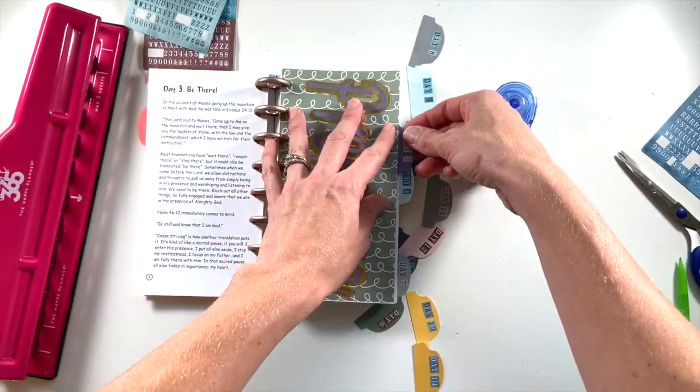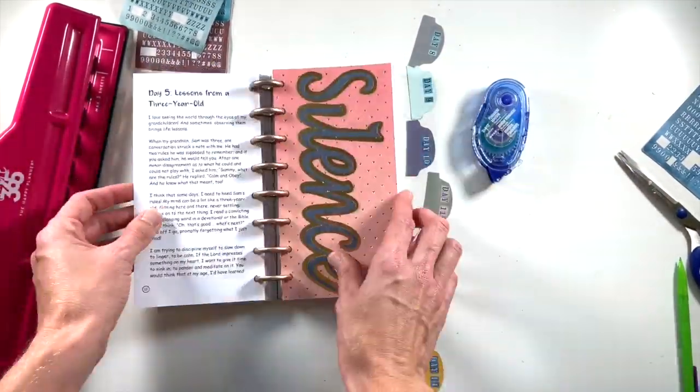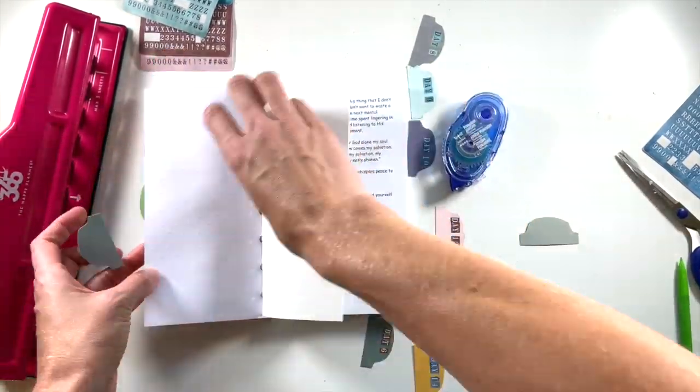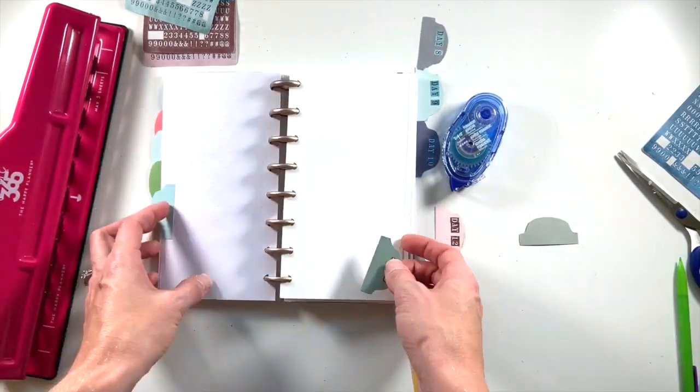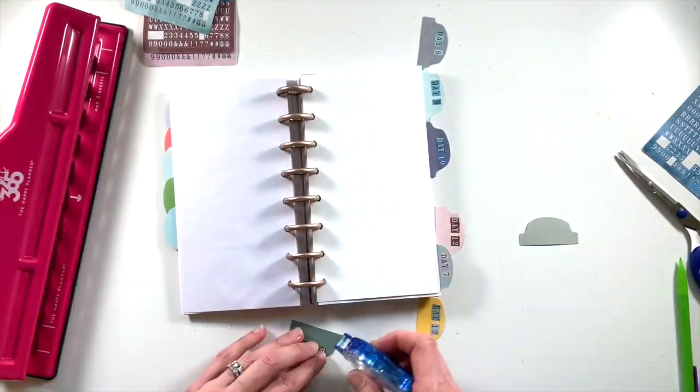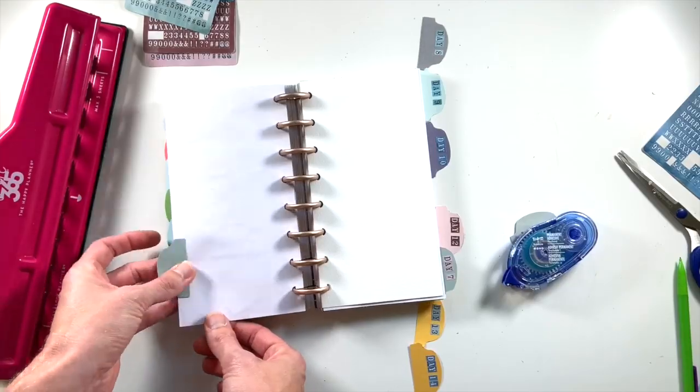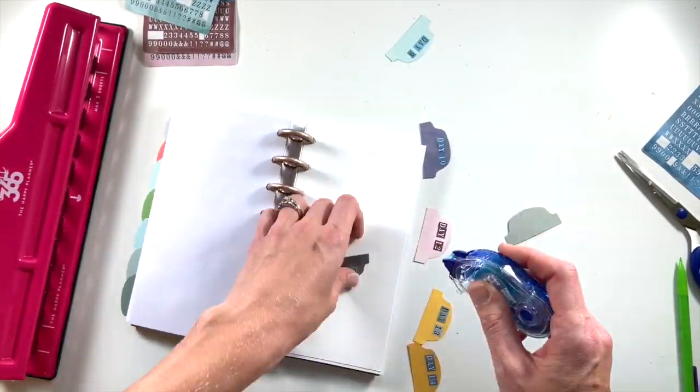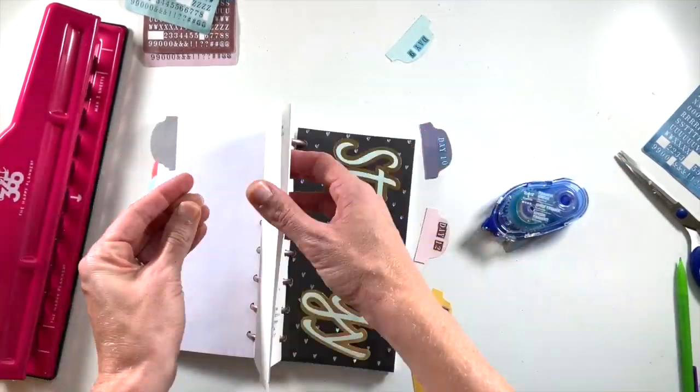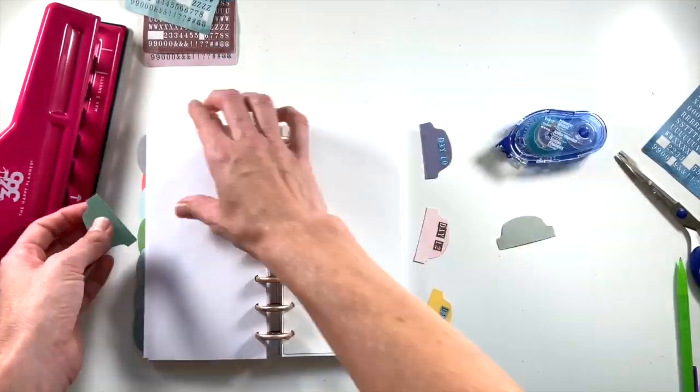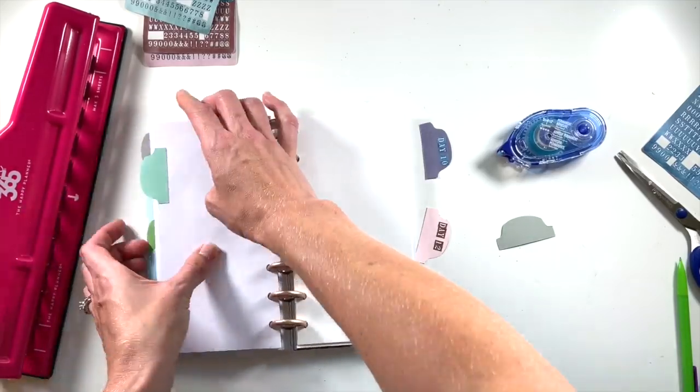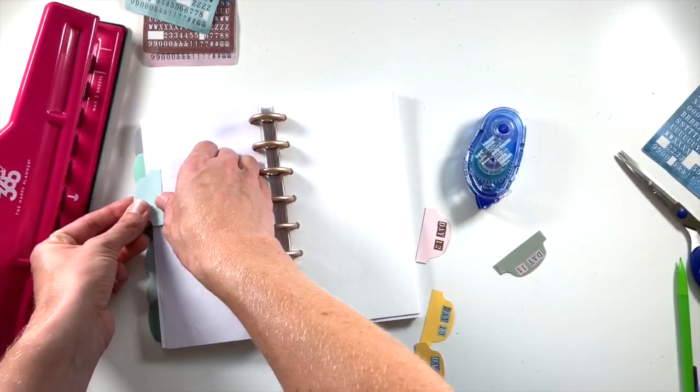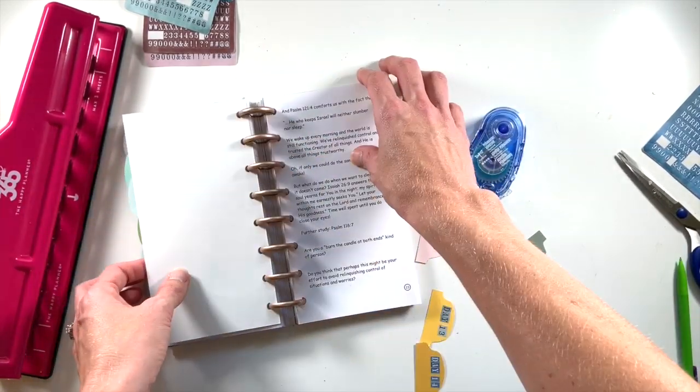You certainly could measure and do the math to figure it out, but I think one of the charming parts of having something that's handmade and put together is that it's not perfect. It doesn't have to be spaced perfectly. This just helped me kind of get it in order and make sure that it wasn't too wonky once they were all in. Then once I'm doing the second row, I just visually line them up with the tab that is in front of them, like the corresponding tab. So day eight is lined up with day one, day nine is lined up with day two, and so on.